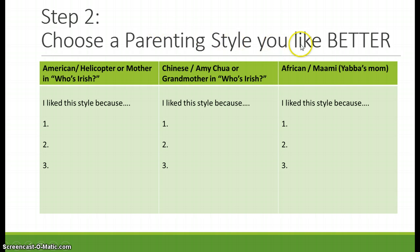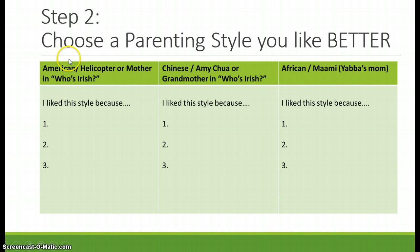Then you're going to choose a parenting style you like better. Work with the same categories. Maybe you like the American helicopter mom style for three different reasons. Maybe you like the Chinese style and you're trying to convince the helicopter parents to be more like Amy Chua, so you'd say 'I like this style because of one, two, and three.' Maybe you like the African style and you can explain why you like that one better too.